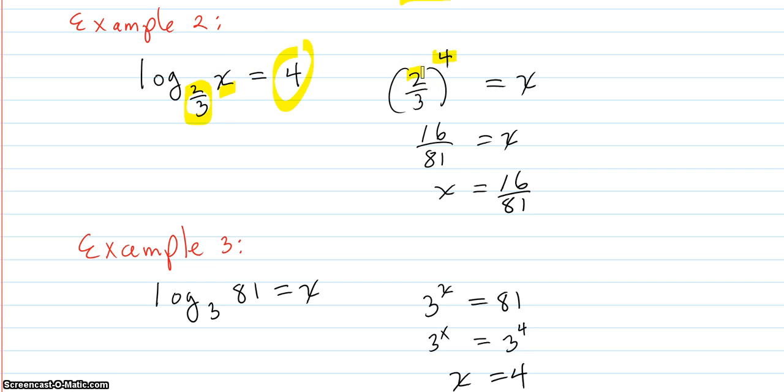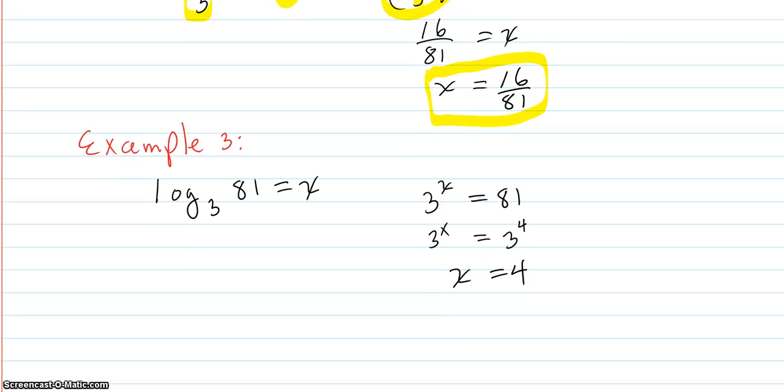4 is the exponent you put on the base 2/3 to get x. You just write that down as an exponential equation. Then you just simplify this and you're going to get x. 2/3 to the fourth power is 16/81. That's what x is. So that's what should go in here to get 4.